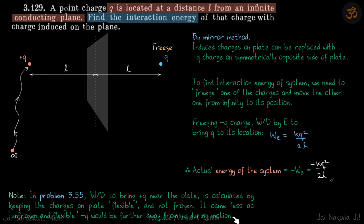You must know why we write the interaction energy as minus K·Q²/2L and not half of that. Some people think that because the field only exists on one side of the plane, the interaction energy should be half — but that is not the case. The work done to bring the charge is half, but not the interaction energy. Make sure you understand where to use the mirror method, when to freeze the charge, and when to keep it flexible.